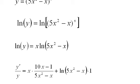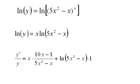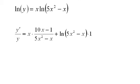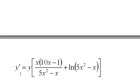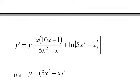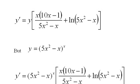And we can simplify this a little bit. For one thing, I can bring the x up here, and just get rid of the 1 there. I can also bring the y up, I can multiply both sides by y, and I end up with y prime equals y times this expression. Now we know what y is, y is 5x squared minus x to the x power, so I can substitute that in for y right there. And here it is.